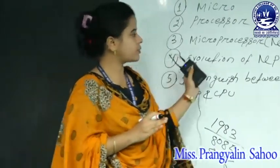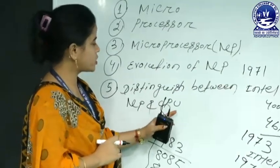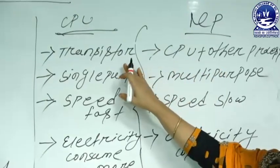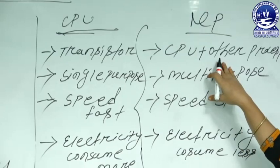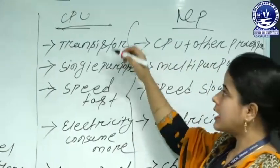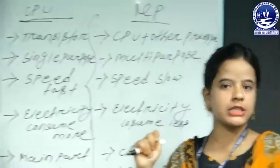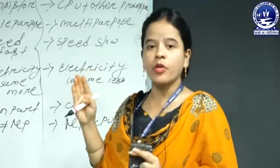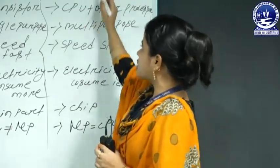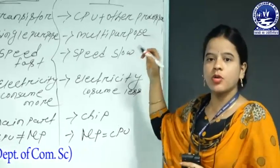Now, the distinction between microprocessors and processors. First difference: the processor is designed consisting of millions of transistors, whereas the microprocessor is designed by combining this processor with other processors. Second difference: a processor always provides single-purpose executions — it contains two components, the ALU and the control unit, so it only performs arithmetical and logical manipulations. But the microprocessor is multi-purpose in nature — it provides different types of jobs to be executed simultaneously.